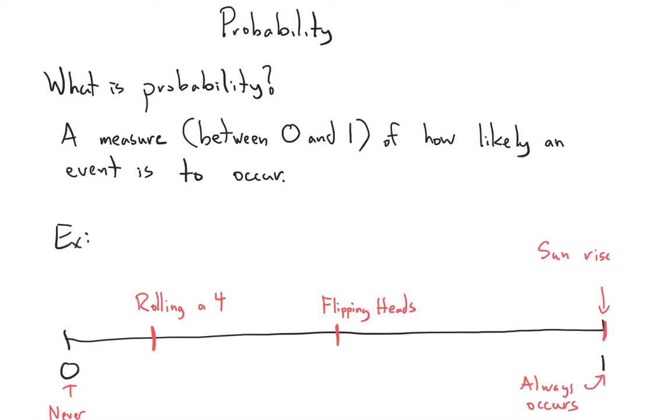In this section, we're going to talk about probability. And all probability is, it's a way of quantifying how likely it is for an event to occur. We say if an event never occurs, if something never happens, we give it a probability of zero.